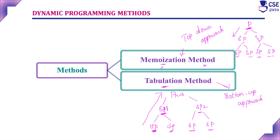The memoization method starts from the top — from the given problem — and proceeds downward. The tabulation method finds the solution for the smallest subproblem first and proceeds upward. So memoization is the top-down approach and tabulation is the bottom-up approach. These two methods will be discussed in detail with a Fibonacci series example in further videos.